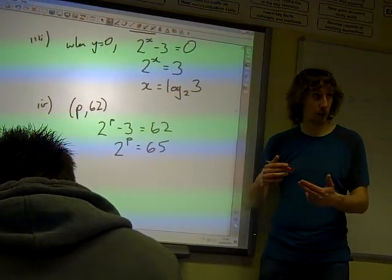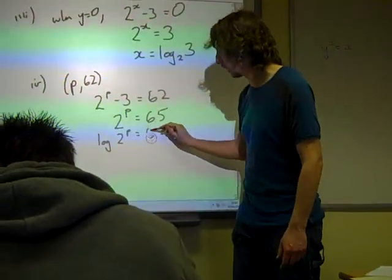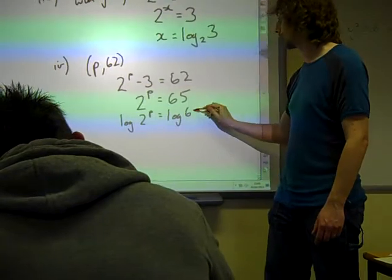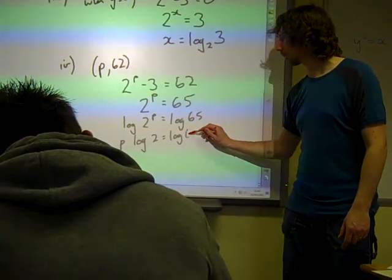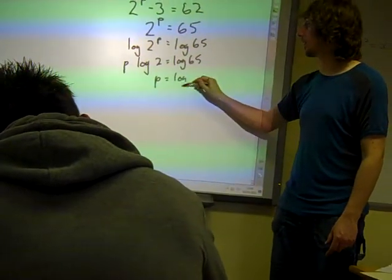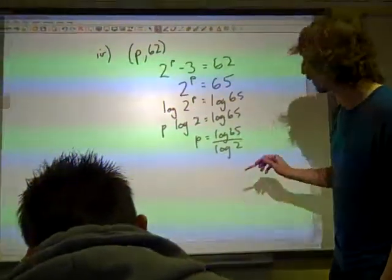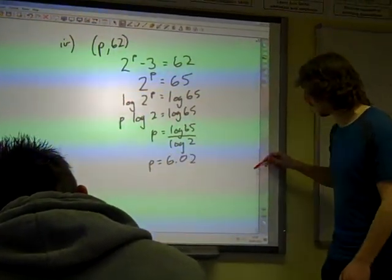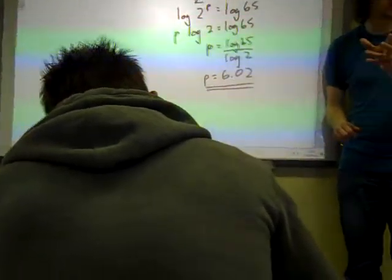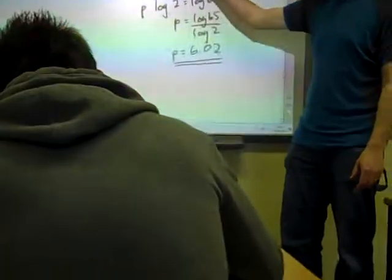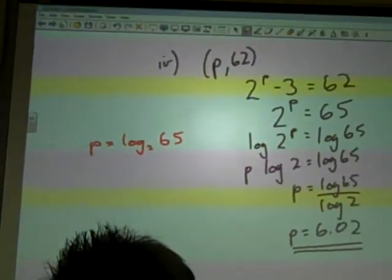Or, we can do the more kind of traditional method, which would be take log base 10 of both sides. I missed out log base 10. Bring the P down to the front. That was our third rule of logarithms. And so, P is log 65 over log 2. I haven't got a calculator in here. Point zero. And did it say three significant figures? Yeah. 6.02. And you can check, somebody who's got a calculator that does that, just double-check it.